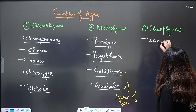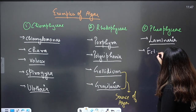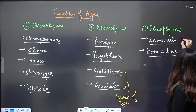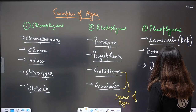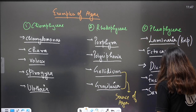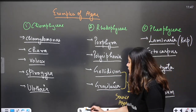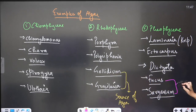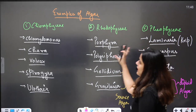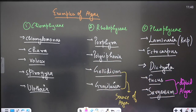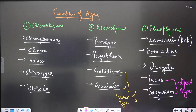Examples of Phaeophyceae include: Laminaria (a kelp), Ectocarpus, Dictyota, Fucus, and Sargassum. Remember that Fucus and Sargassum are the exception because they are the only diploid algae. All algae are haploid except Fucus and Sargassum — their body has two sets of chromosomes. So Fucus and Sargassum are the diploid algae.